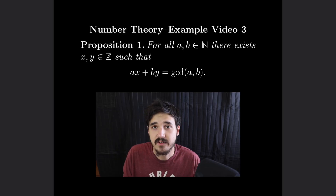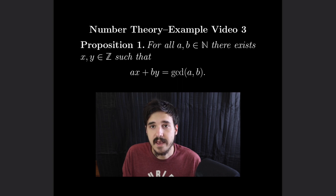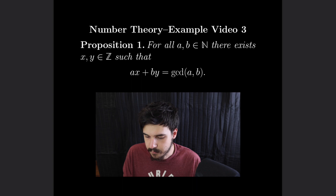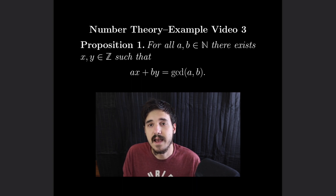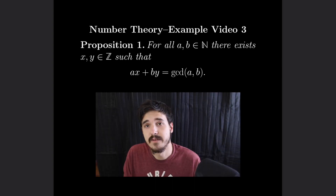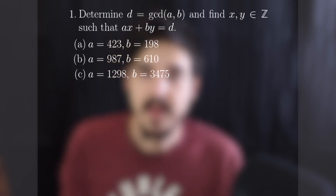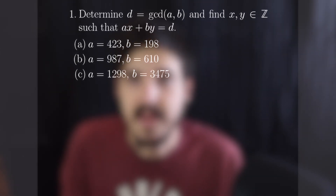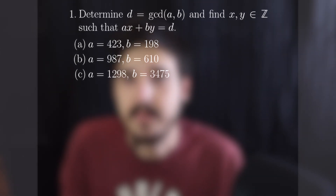We only have one proposition for today's video: a simple GCD proposition that says for natural numbers a and b, there exist integers x and y such that ax plus by equals the GCD of a and b. So you can construct the GCD as a linear combination of its components, and that's what we're going to be using for most of these problems.